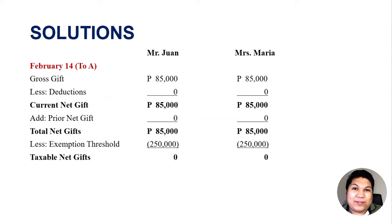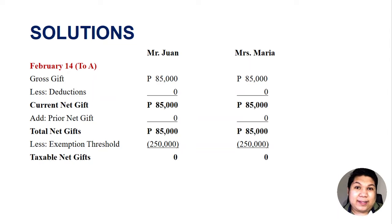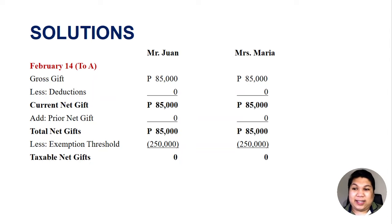Mr. Juan and Mrs. Maria will have zero tax. They will still be required to file a donor's tax return for their donation to A, but they will pay nothing because the taxable net gift is zero.